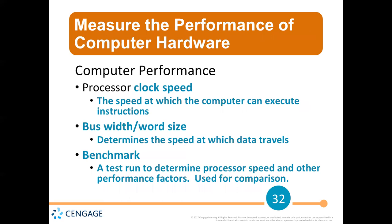When it comes to computer performance, there are three things you can check. By just using your computer, you can often tell something's wrong — people say things like 'my computer is so slow.' You can look at your processor clock speed, which is the speed at which your computer executes instructions. There's software that will actually measure your clock speed. Below on the slide is something called a benchmark, which sets a standard. For example, your car is supposed to get 20 miles per gallon, but you notice you're filling up much more often.